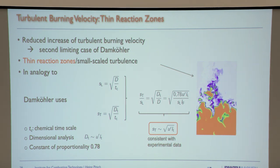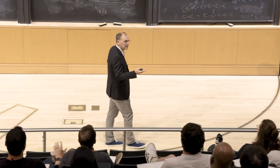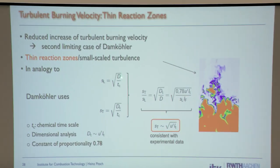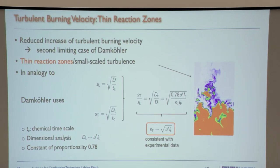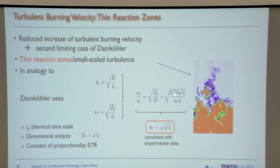For the turbulent flame in the thin reaction zones regime, the flame structure stays exactly the same, so the chemical time scale also stays the same. He wanted to express the turbulent burning velocity similarly, but the diffusivity is not the same — in the preheat region, turbulence provides the mixing rather than molecular mixing.